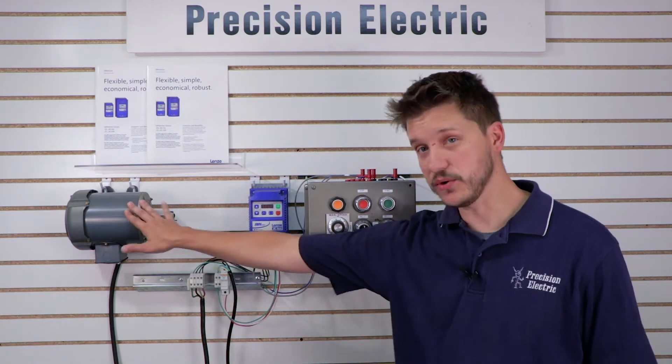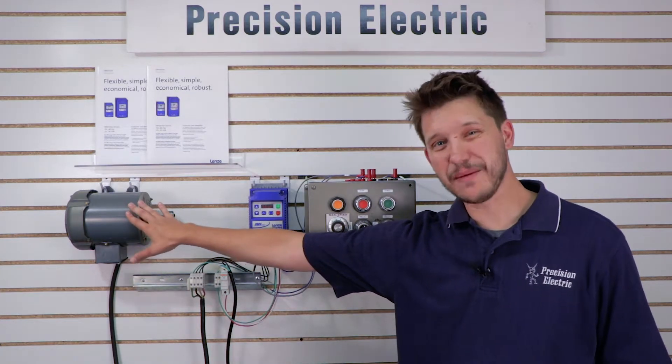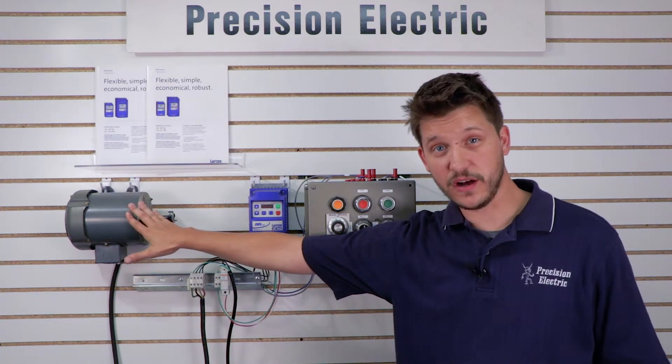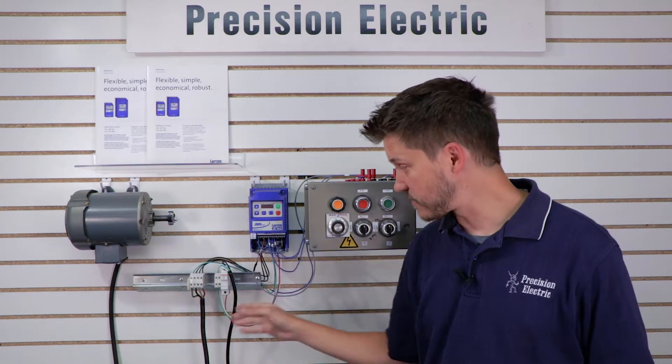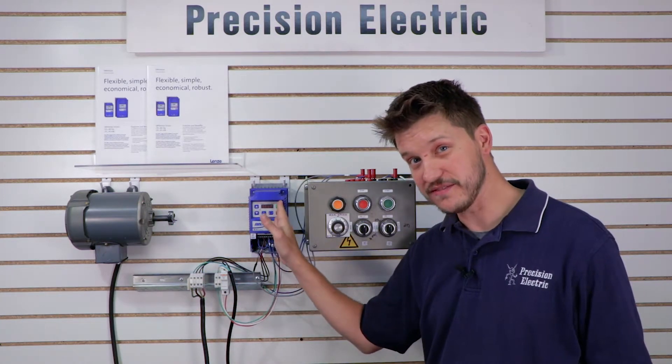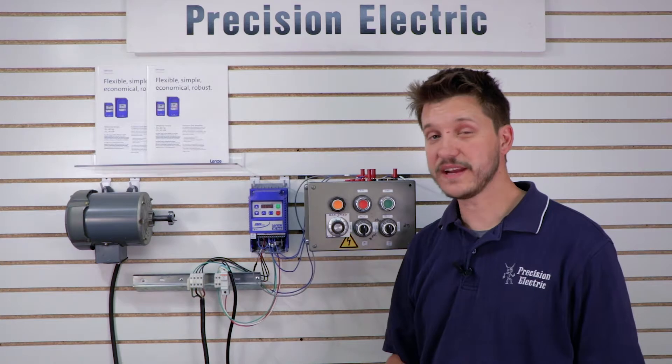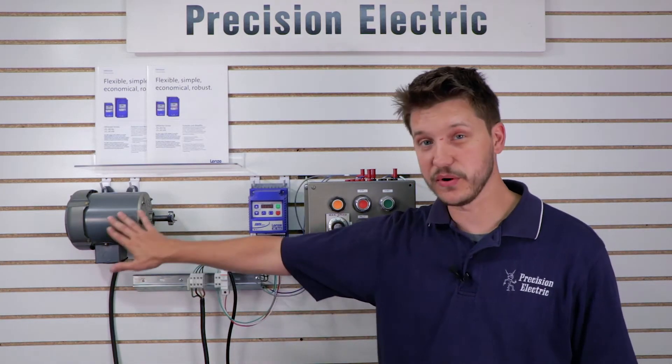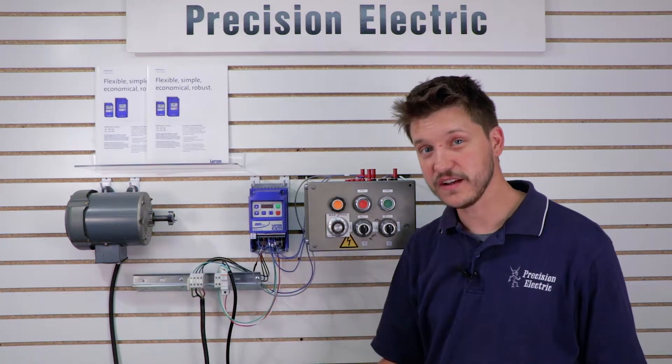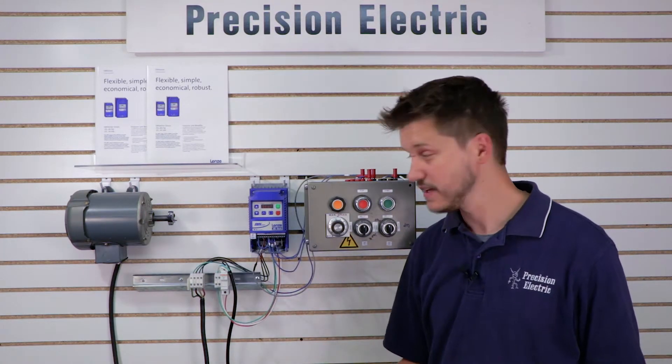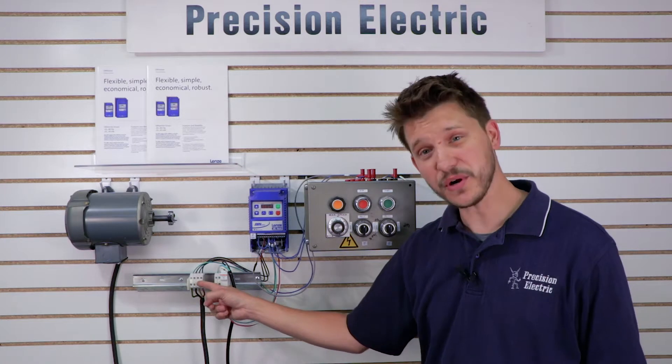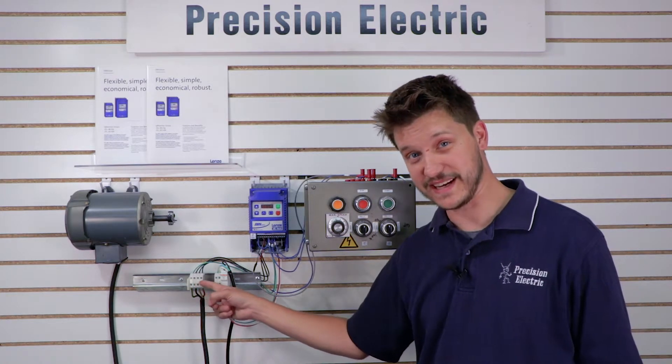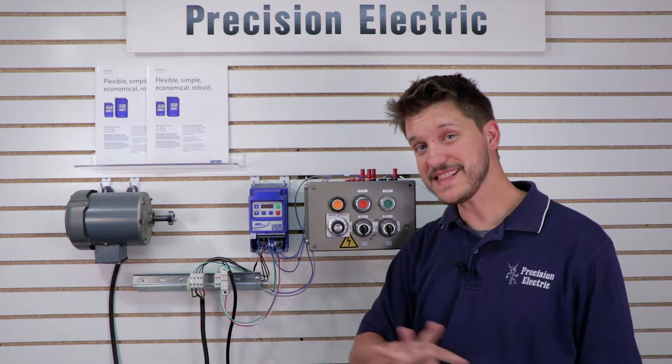The second part is actually protecting your motor. A real common issue that we run into when people call with these drives is they wire something between the output of the drive and the motor itself. There can't be anything wired between the output of the drive terminals U, V, and W and the motor itself. You can't wire it through a starter, you can't wire it through a contact block. You can wire it through terminal blocks, that's fine because you're maintaining a constant connection, but nothing that can open.